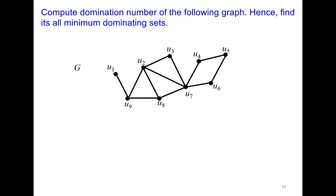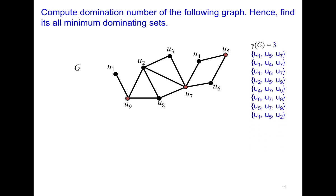Try to find the domination number for another graph. The domination number comes out to be three, and there are at least eight minimum dominating sets — please verify this yourself; it is a very interesting exercise.